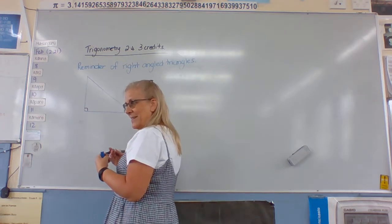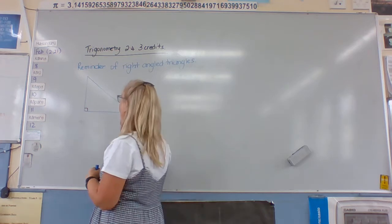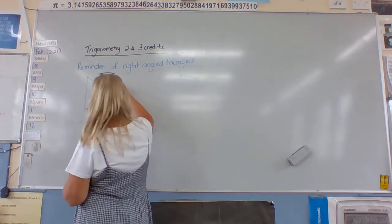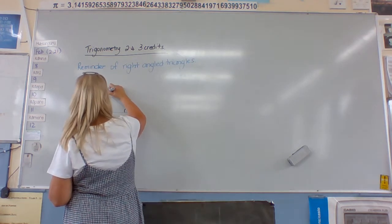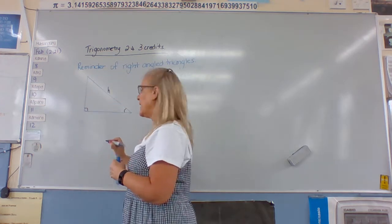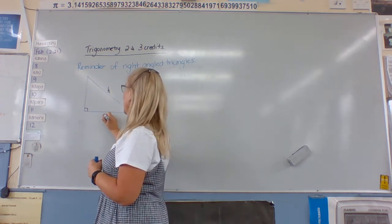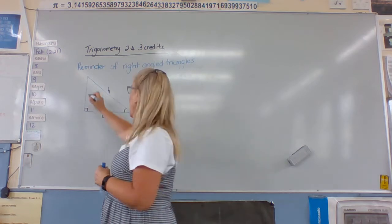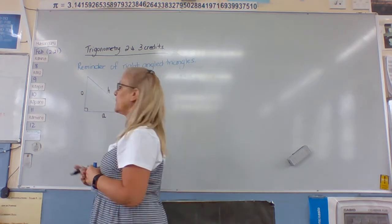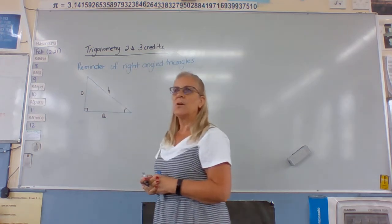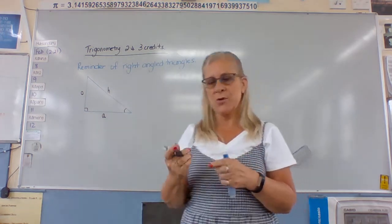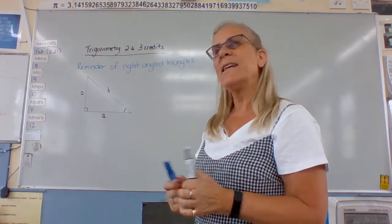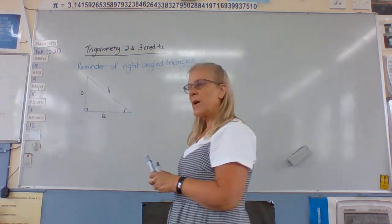Adjacent — next to the angle, like a boxer standing in the corner, and O is opposite the boxer. So, as long as we can label those three things, then we can get what are called our trig ratios.